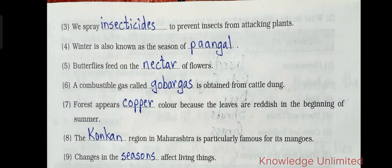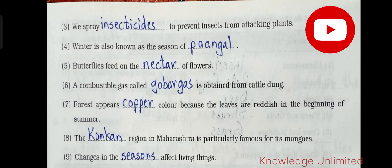We spray dash to prevent insects from attacking plants — the answer is 'insecticides.' We spray insecticides to prevent insects from attacking plants. The fourth one: winter is also known as the season of 'pangal.'